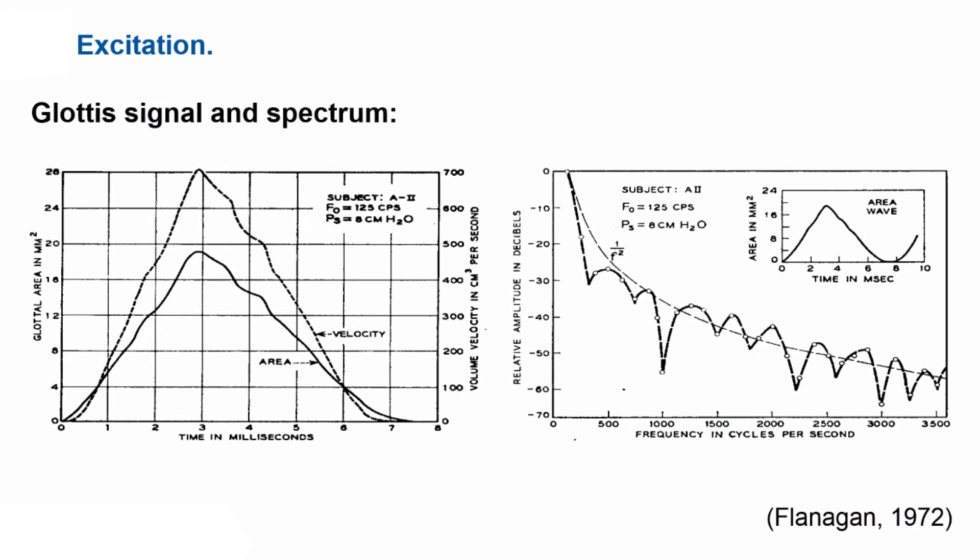There is illustrated the surface which you have of the area between the vocal folds, the glottal area and also the velocity, both are triangular shaped. And on the right hand side you see the corresponding spectrum. The spectrum is a broadband spectrum which however drops with the square of the frequency.